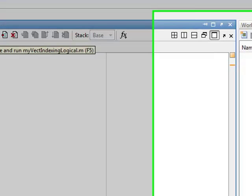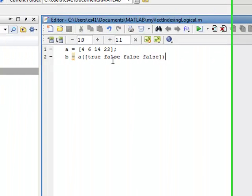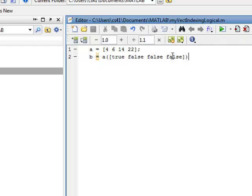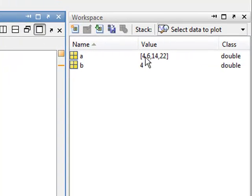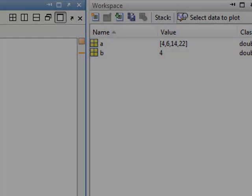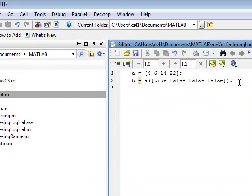So it's just gonna run it and as you see here it only let the first of the four elements through. The falses block elements from coming through and the trues allow them to come through to the result. And so over here you see that the 4 got through and the 6 and the 14 and the 22 got blocked. Same thing down here in the command window.